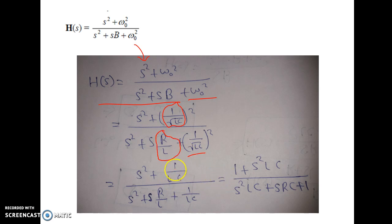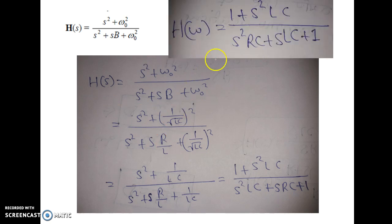Okay. Now, simplify this, you will get H of S equal to 1 plus S squared LC by S squared LC plus SRC plus 1. And from the voltage divider rule, what we got? We got H of omega or H of S equal to 1 plus S squared LC by S squared RC plus SLC plus 1. Okay. See, this H of omega or H of S and this H of S, these two express the same expression.